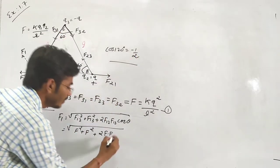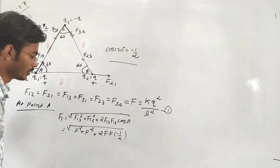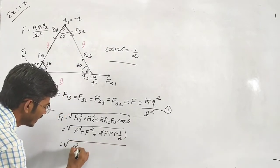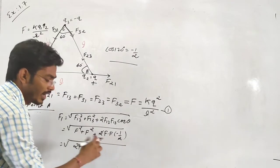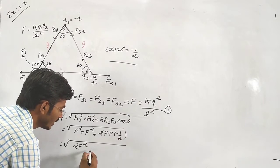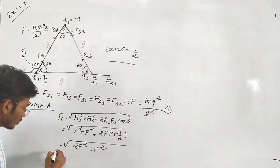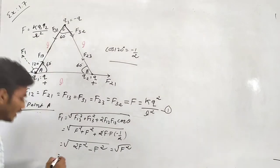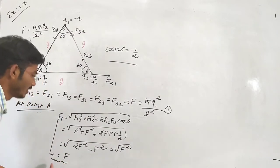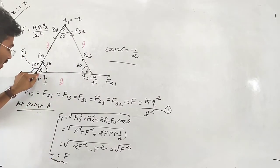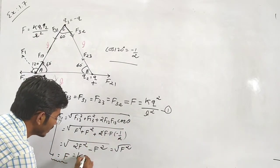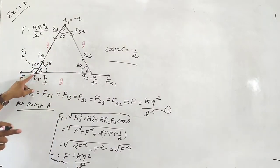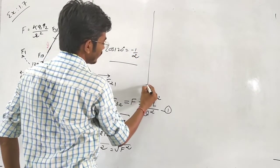Working through the calculation, we get terms involving x squared. The result at point A involves 2x squared minus x squared, giving us k Q squared divided by x squared. This is our answer for the resultant force at point A.